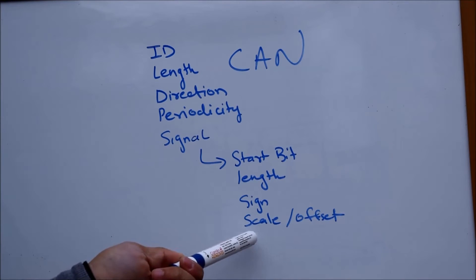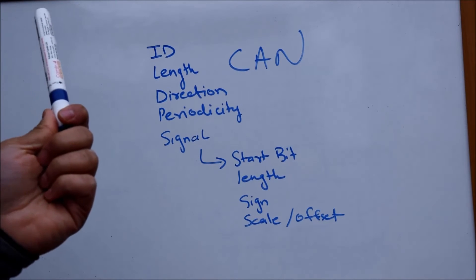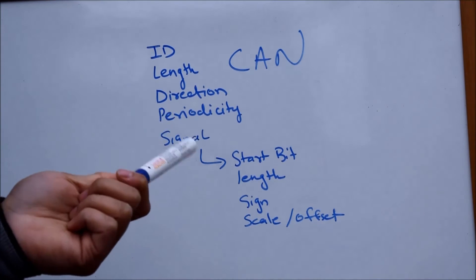Then there is something called a scale and offset, which means how you convert this raw signal that the ECU transmits to some physical readable English value.